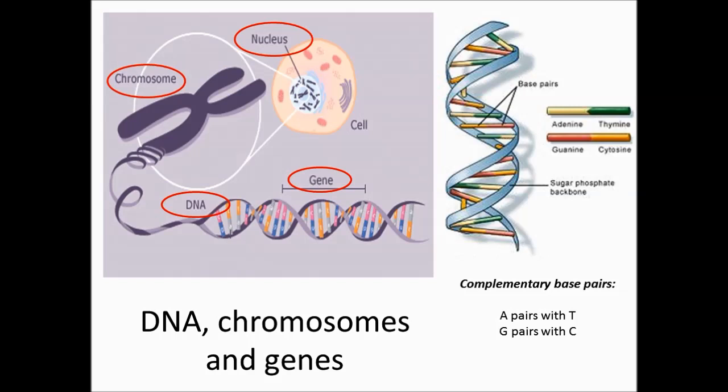DNA is a large molecule made of two strands that twist together to form a double helix. The two strands are linked together by chemicals called bases. The sequence or order that the bases are in is called the genetic code. The bases are joined like rungs on a ladder.